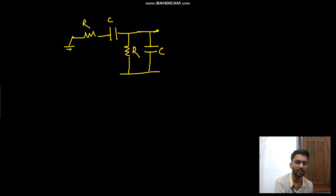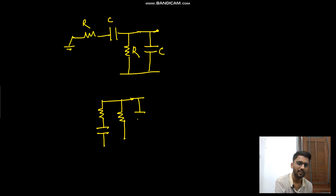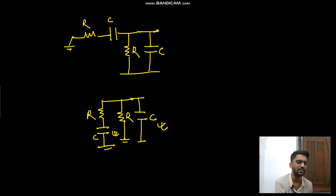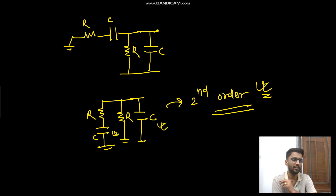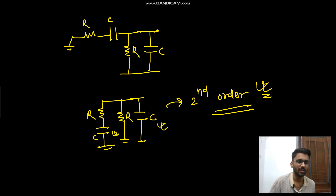If you short-circuit the input, this combination becomes R, C, R, and C. The thing is, you cannot reduce the capacitances here — this C and this C can't come in parallel, nor in series. So it is a second-order circuit. We will deal with second-order circuits in future videos. Thank you.